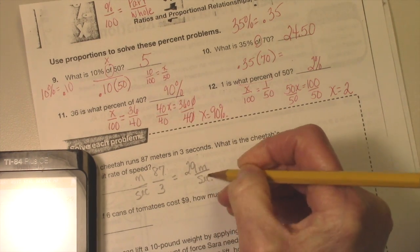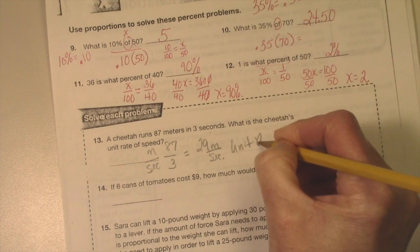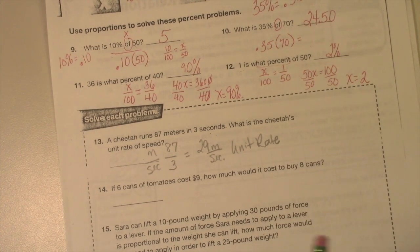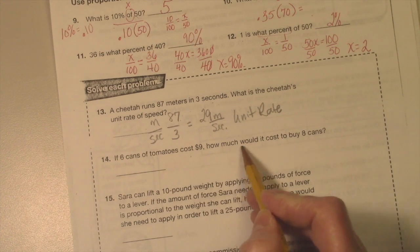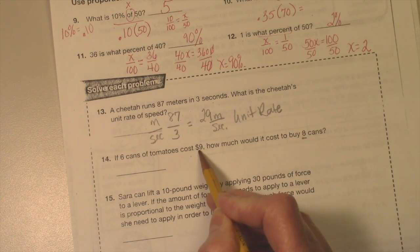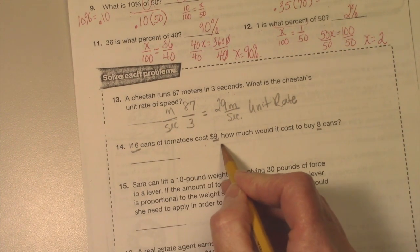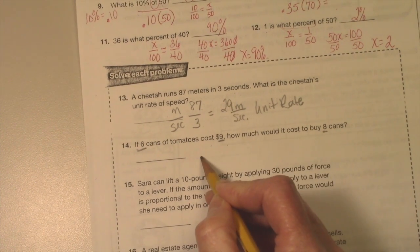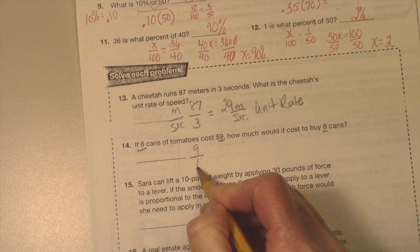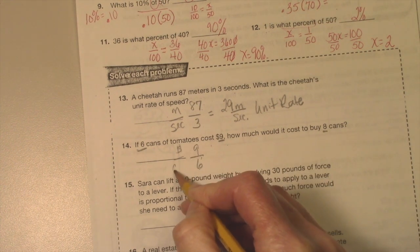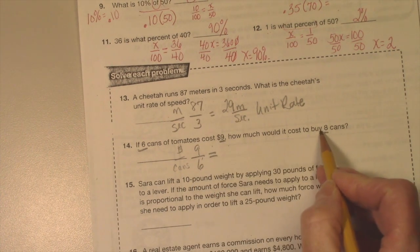Okay, unit rate. If six cans cost $9, how much would it cost to buy eight? We got three numbers, so three numbers is going to be a proportion. Six cans cost $9. Keep in mind you have to have money before you buy anything, so I'm going to go 9 over 6, so money over cans. That's how I'm setting this up. Equals how much would it cost to buy eight cans? Money over cans.